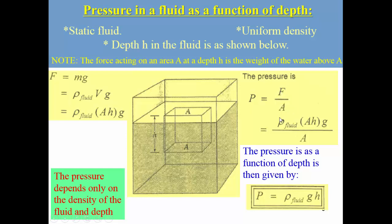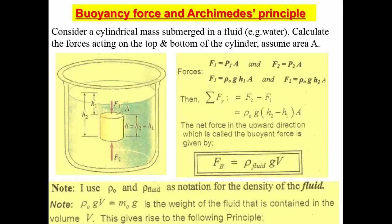Since pressure is defined as force over area, we replace the force with the weight of the fluid derived earlier. The area cancels out, yielding an equation for pressure as a function of depth: P = ρgh. From this equation, the only variable is depth, since the density of the fluid and the acceleration due to gravity are constants.